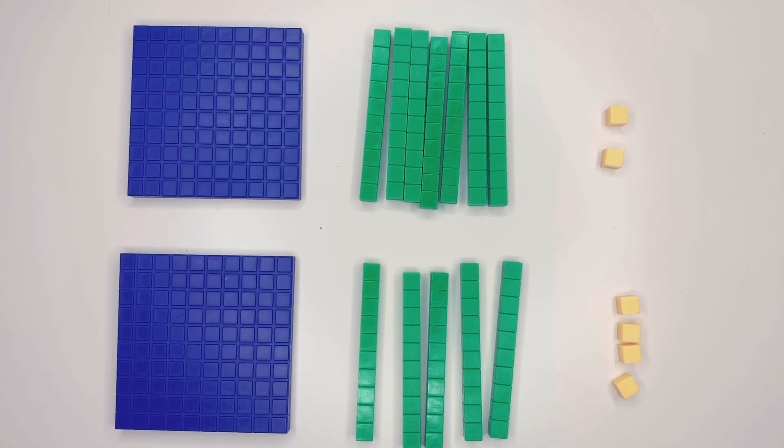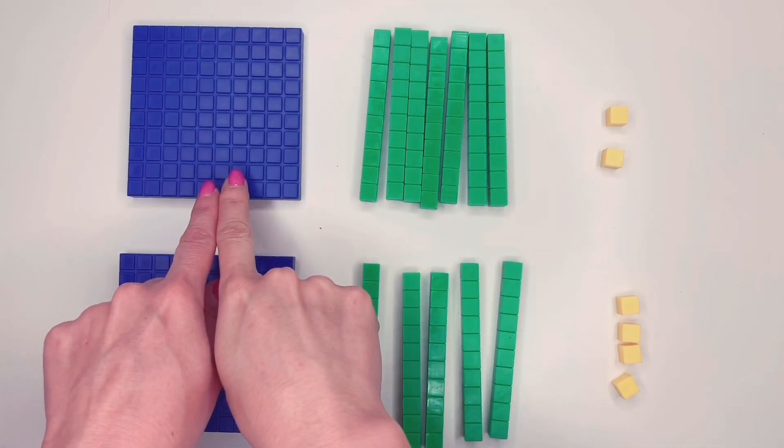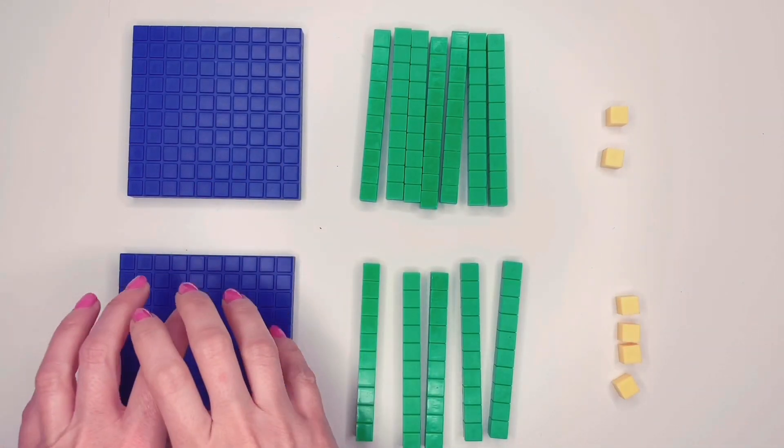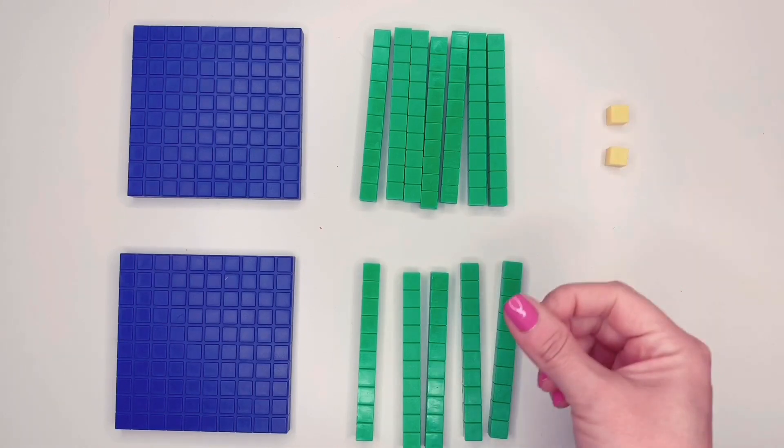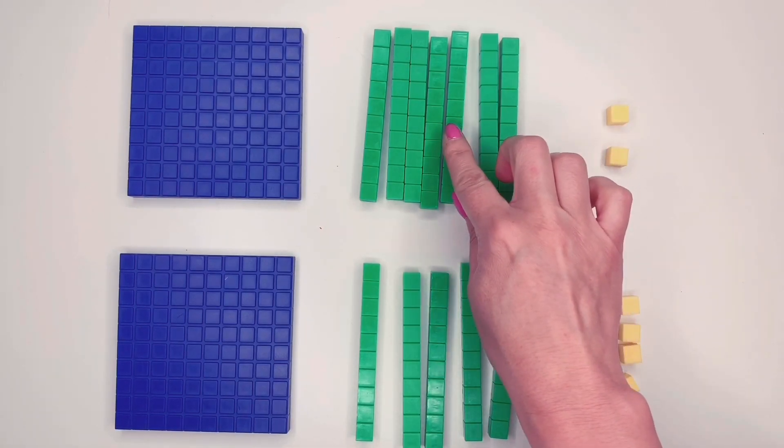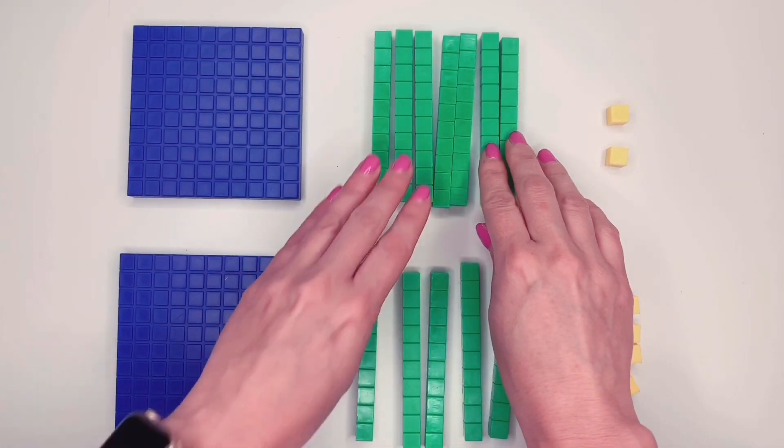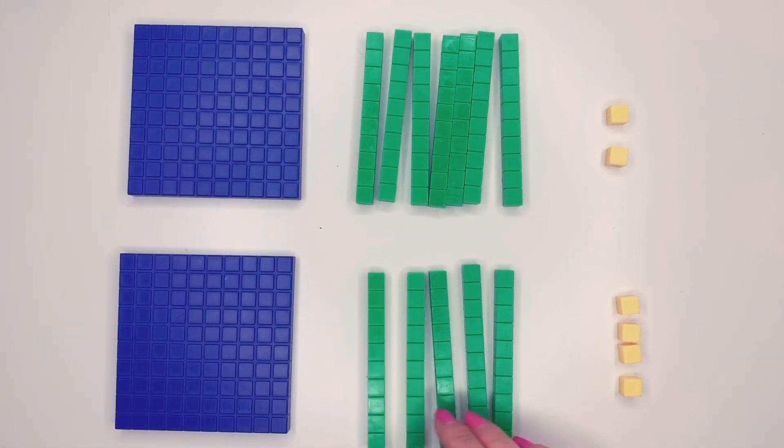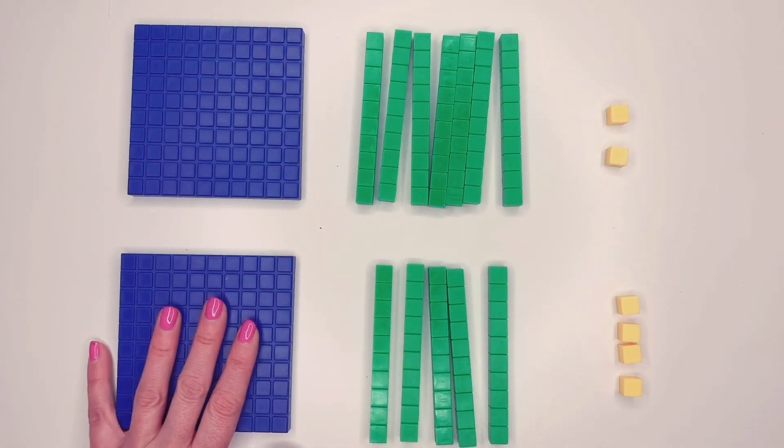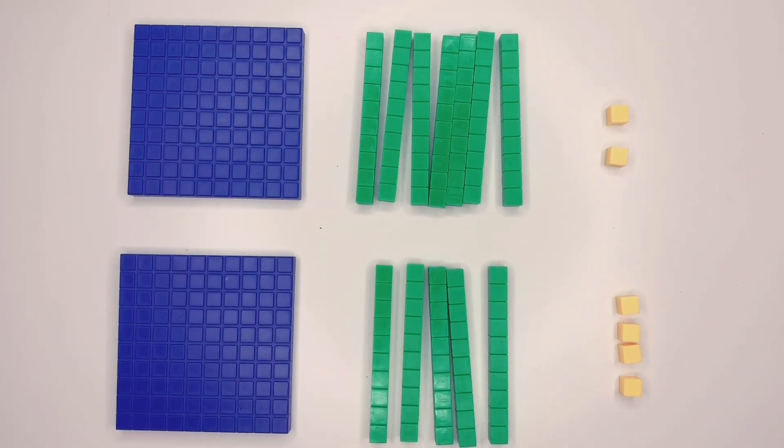So here's another math problem for us. We have hundreds, tens, and ones plus hundreds, tens, and ones. So let's see what we have. Here we have two ones, seven tens, and one hundred. So let's add them together and see if we have to do any regrouping.